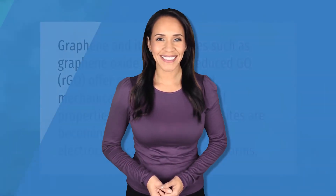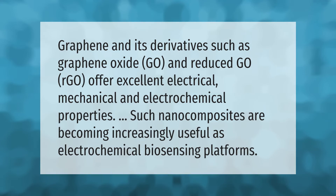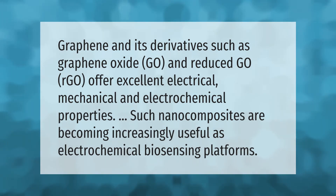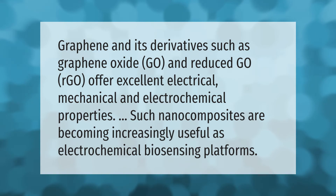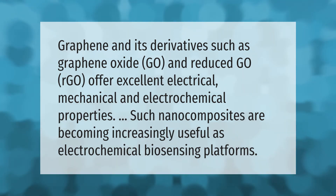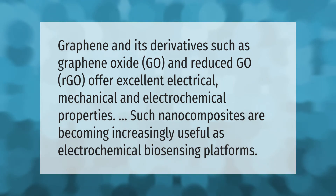Graphene and its derivatives such as graphene oxide (GO) and reduced GO (rGO) offer excellent electrical, mechanical, and electrochemical properties. Such nanocomposites are becoming increasingly useful as electrochemical biosensing platforms.